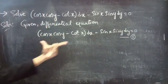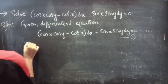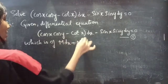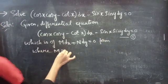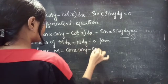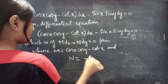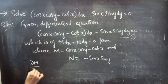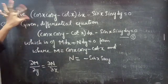Here the equation is of the form M dx plus N dy equals to 0, where M equals to cos(x)cos(y) minus cot(x), and N equals to minus sin(x)sin(y). If the partial derivative of M with respect to y is equal to the partial derivative of N with respect to x, then we can say that the given equation is an exact equation.